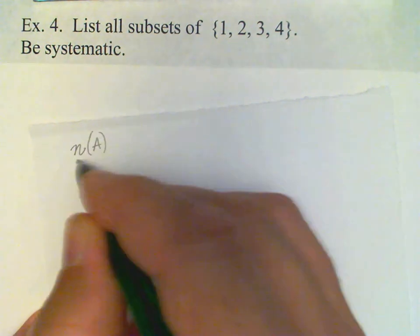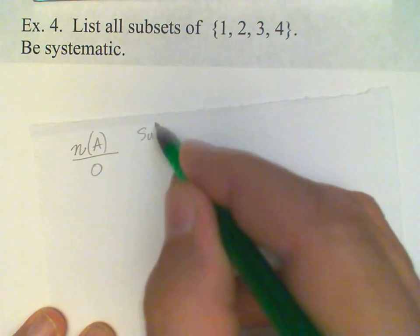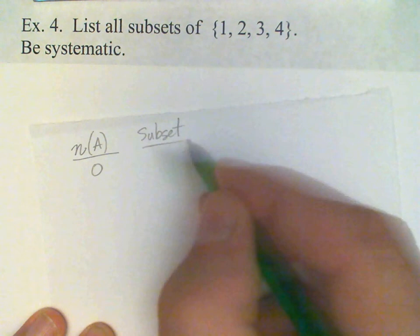Okay, so what I'm going to do is I'm going to list all the possibilities for first no element. If n(A) is 0, there's one subset, namely the empty set.